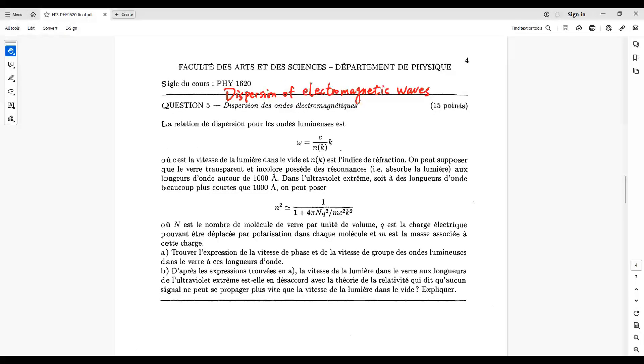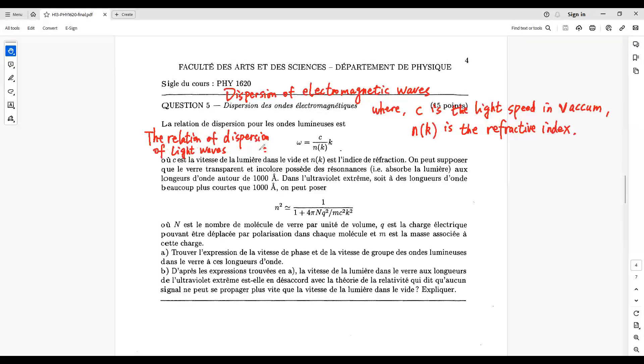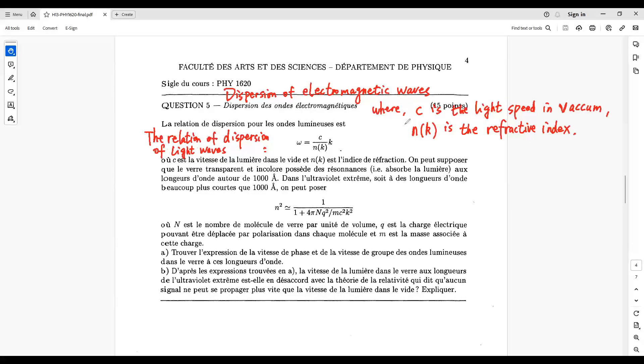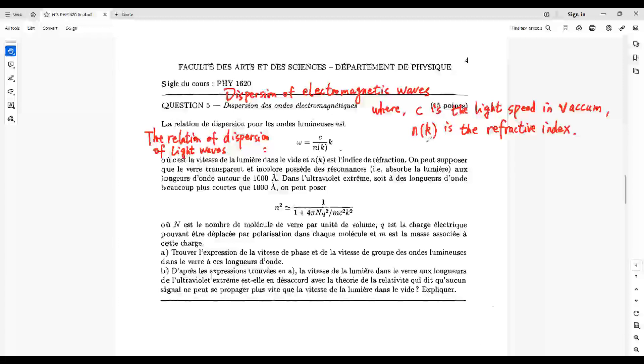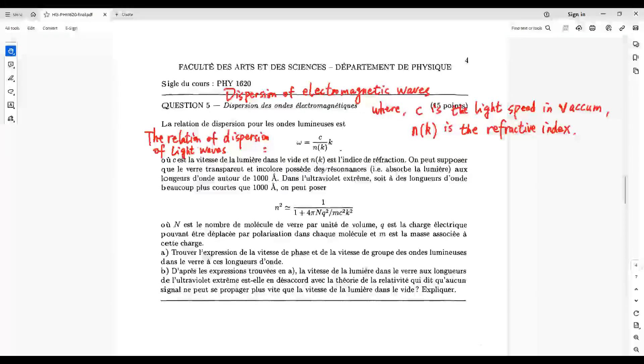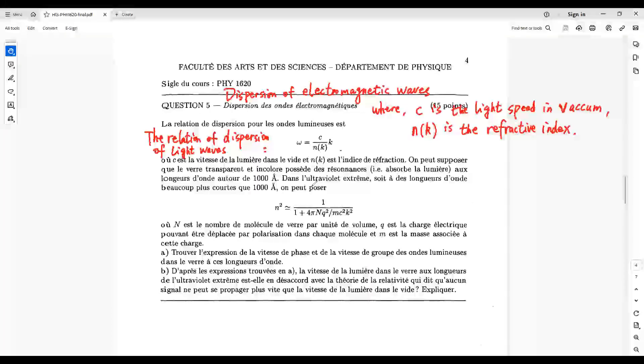Dispersion of Electromagnetic Waves. The relation of dispersion of light waves is given by this one, where C is the light speed in vacuum and NK is the reflective index. The transparent and colorless glass have resonances to the wavelength along this one. In extreme ultraviolet, the wavelength would be much less than this one.